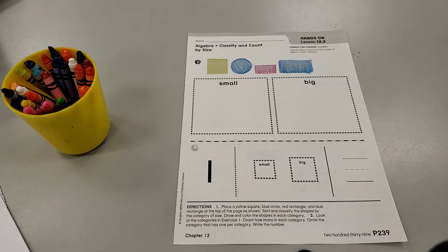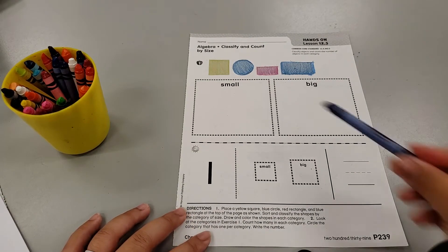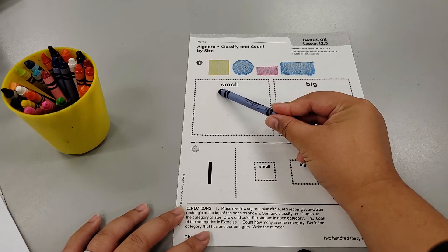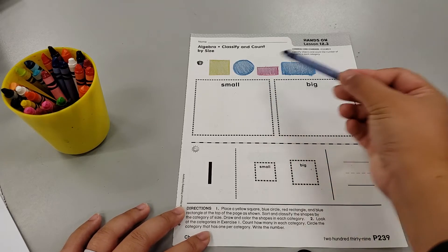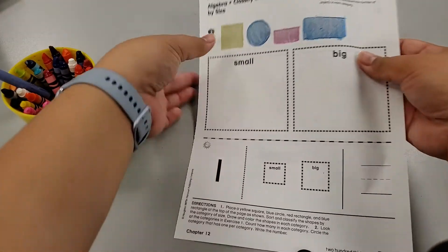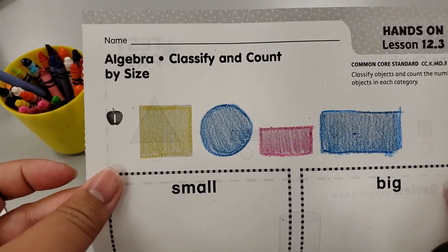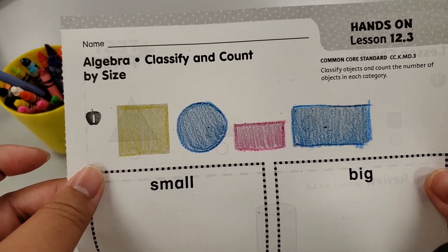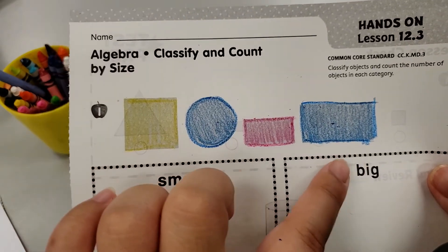Now, sort them into the categories. What are our categories this time? By size. Small and big. So if you look here, I'll bring this up a little closer. We have our square, circle, rectangle, and rectangle.